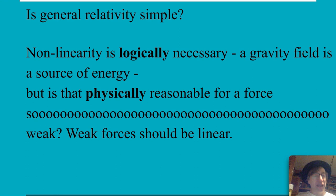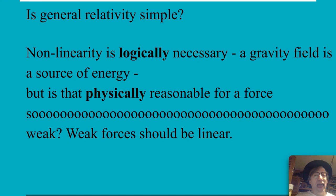Another issue is non-linearity. Logically it's absolutely necessary, because a gravity field would gravitate — it would be a source of energy, and sources of energy cause spacetime to bend. But physically? EM is a wonderful linear theory and it's 42 orders of magnitude stronger than gravity. That linear theory, 42 orders of magnitude stronger, and now the weak guy is non-linear? Physically, we're mathematical physicists, not just mathematicians, and physically I don't think that sounds reasonable.